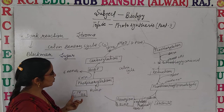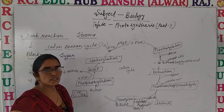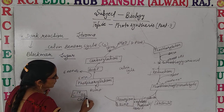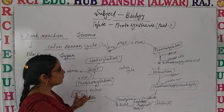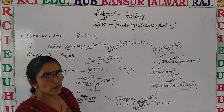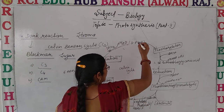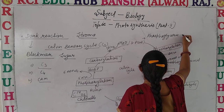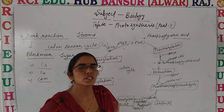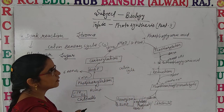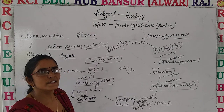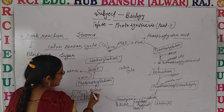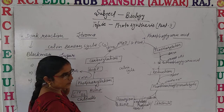They used radioactive CO2 and traced the path using a unicellular organism. They found that during this cycle, one stable compound is formed that is a three-carbon molecule — phosphoglyceric acid. Because this stable compound has three carbons, it is called the C3 cycle.